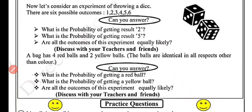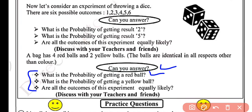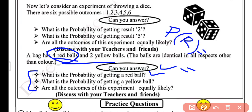A bag has 4 red balls and 2 yellow balls. The balls are identical in all respects other than color. So total 6 balls — 4 red and 2 yellow. We have to answer the following questions. What is the probability of getting a red ball? Number of favorable outcomes is 4, total outcomes is 6. So probability of getting a red ball is 4 upon 6, which is 2 by 3.